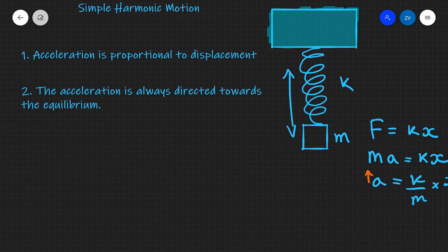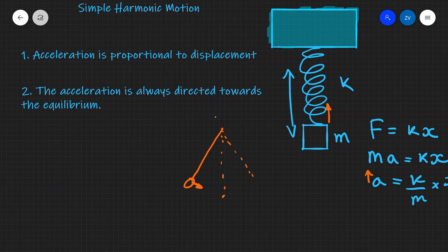Our second condition is that the acceleration is always directed towards the point of equilibrium. In this case, the spring will always try to go back to its original shape. So if we pull the spring down, the force acting on it will be acting upwards. Similarly, for a pendulum, the force will always be trying to bring it back towards that equilibrium point.